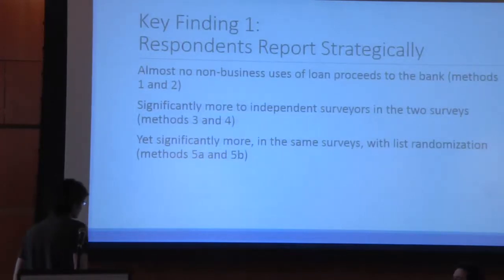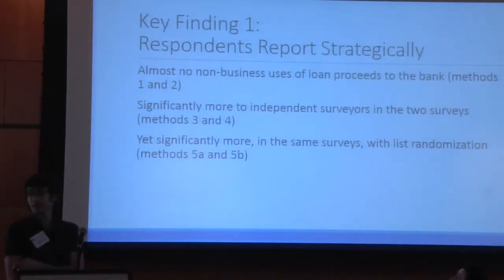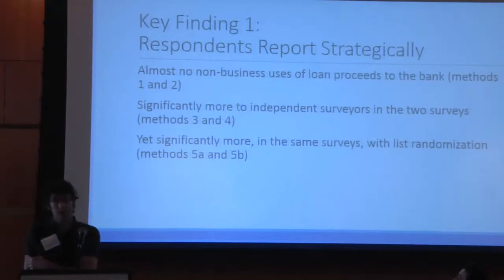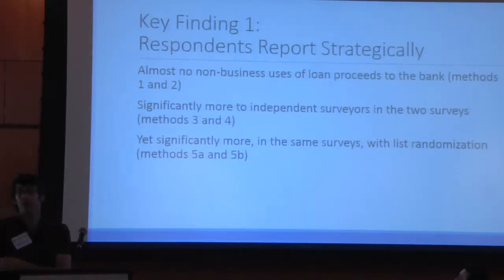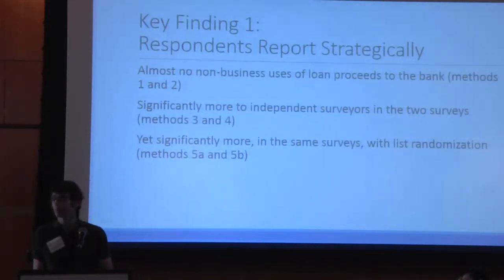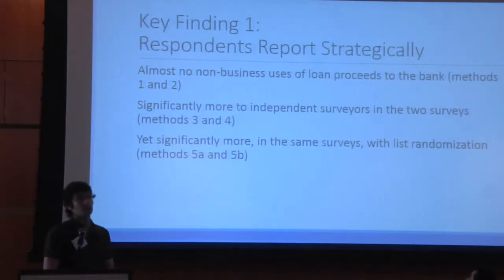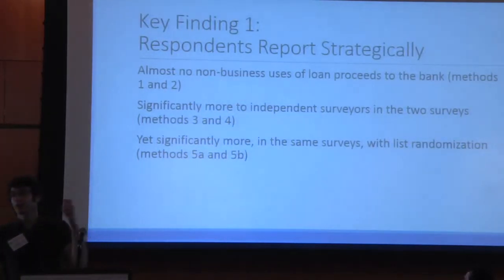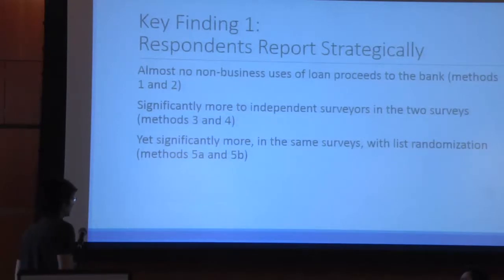Summarizing the key findings: first, perhaps not surprisingly to economists, respondents appear to be reporting strategically. They report almost no non-business uses of loan proceeds to the banks. They report significantly more to independent surveyors, and yet significantly more than that through the list randomization method — when given the opportunity to report relatively unobtrusively how they think they've used their loan proceeds.